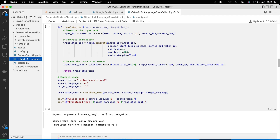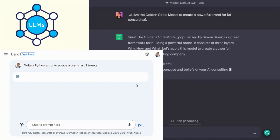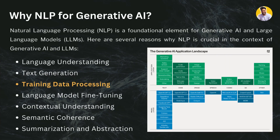The next reason is text generation. Applications like ChatGPT and Bard are doing text generation, and NLP techniques play a pivotal role in training those models to generate text that mimics human language patterns, styles, and semantics. You can see how ChatGPT and Bard are generating text in response to our prompts.